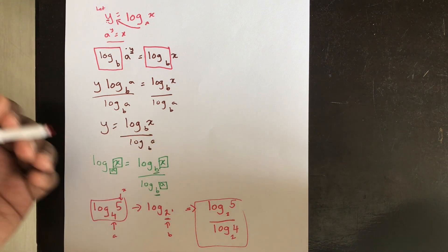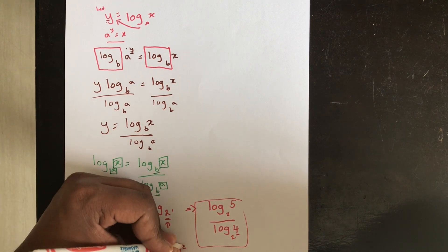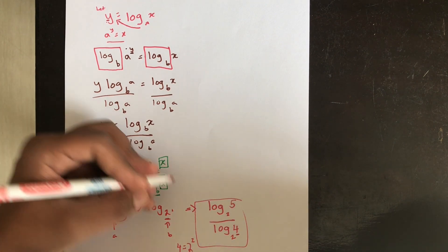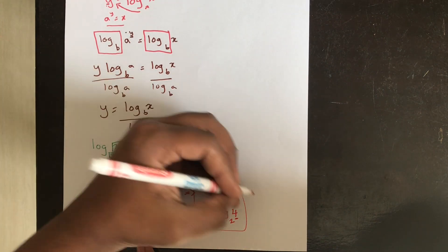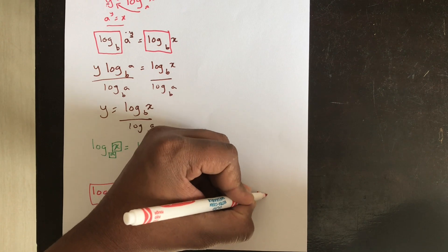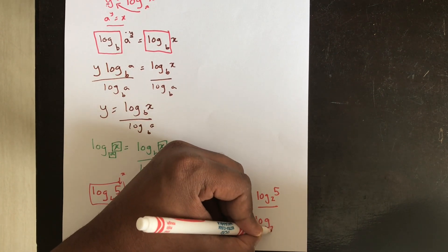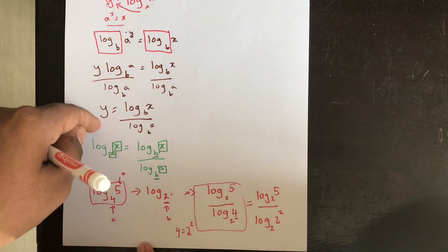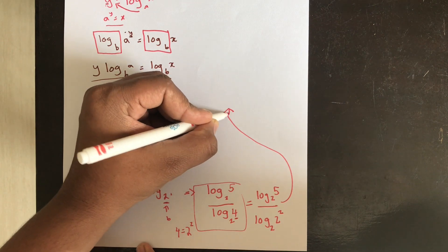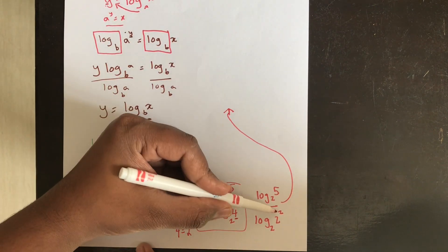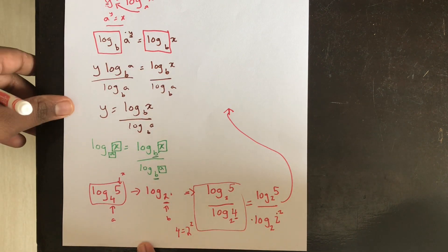Now if I were to go a step further, I know that 4 is equal to 2 squared. So I can still go ahead and actually get something else. So this is the same as log 5 base 2 divided by log 2 squared base 2. Now I'll continue this here.